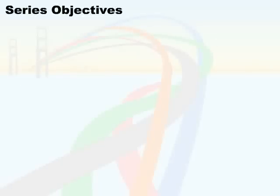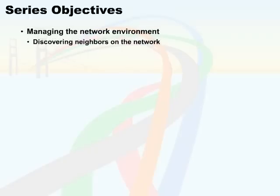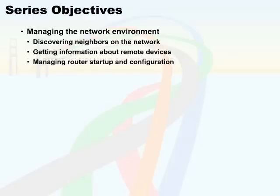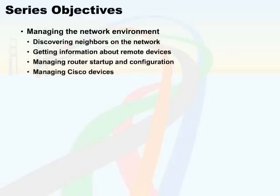Once you have done the basic configuration on your switch and your router, you will be able to get into management of your network environment — discovering neighbors by using the Cisco Discovery Protocol, getting information about remote devices using CDP and other tools, managing the startup configuration and managing images on your Cisco devices, and finally, managing the devices themselves.